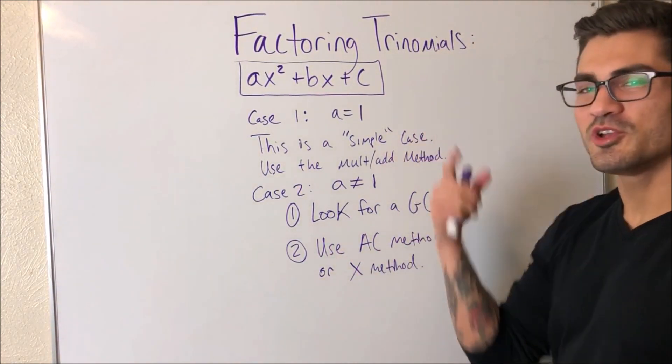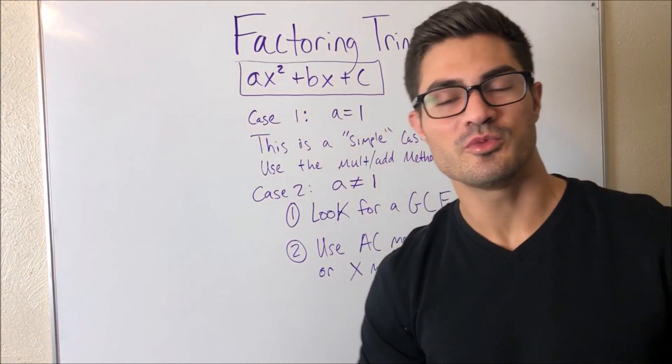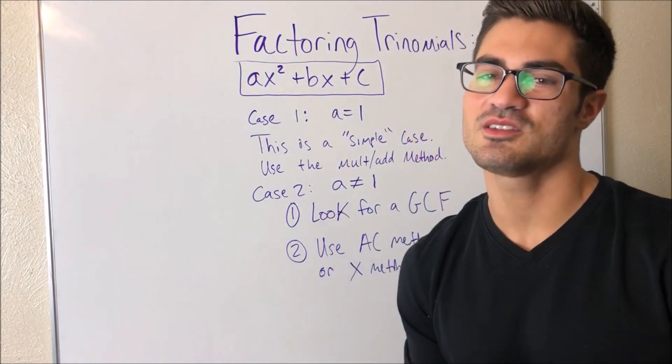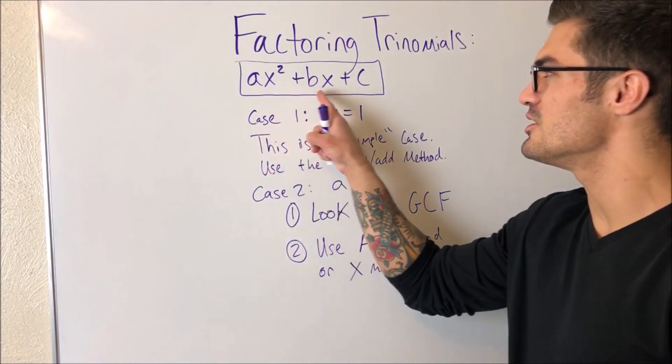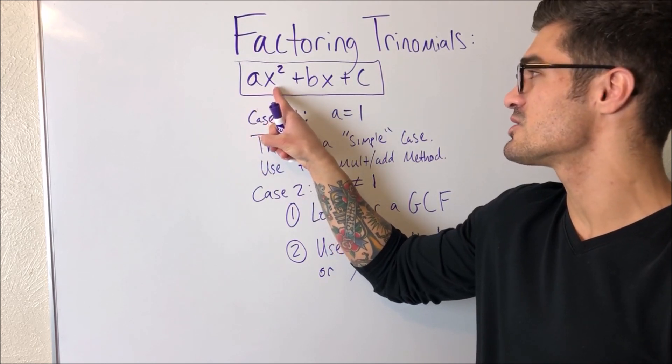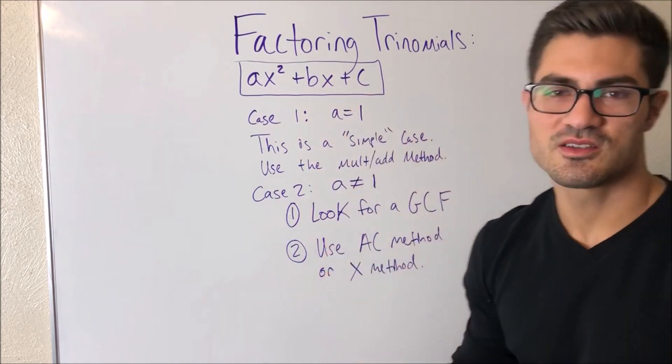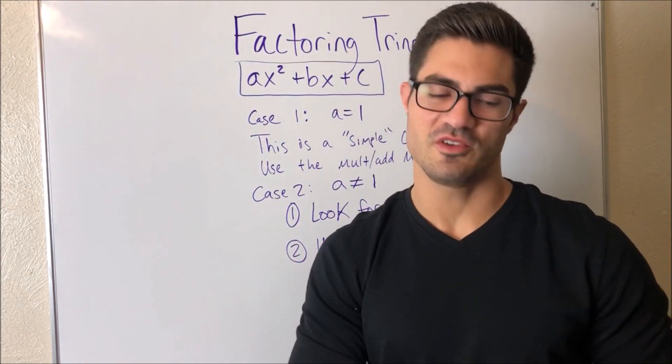So a trinomial, first of all, what is a trinomial? It's basically a polynomial with three terms, a specific type of polynomial, and it looks like this form: a is a constant times x squared, b is a constant times x, and then c is a constant.